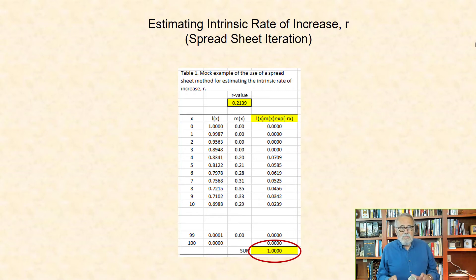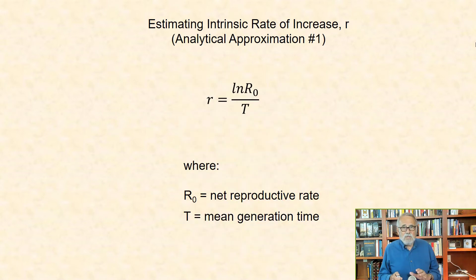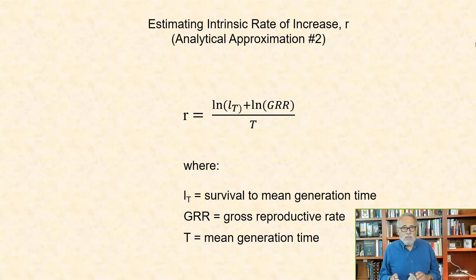Here I present three different analytical formulas for estimating the intrinsic rate of increase. This is distinct from the iterative methods I just showed with, for example, Newton's method. The first is r equal the natural log of the net reproductive rate divided by the mean generation time, T. The second formula for an analytical approximation of r is r equals the natural log of the survival probability to the mean generation time, T, plus the natural log of the gross reproductive rate, all divided by the mean generation time, T.